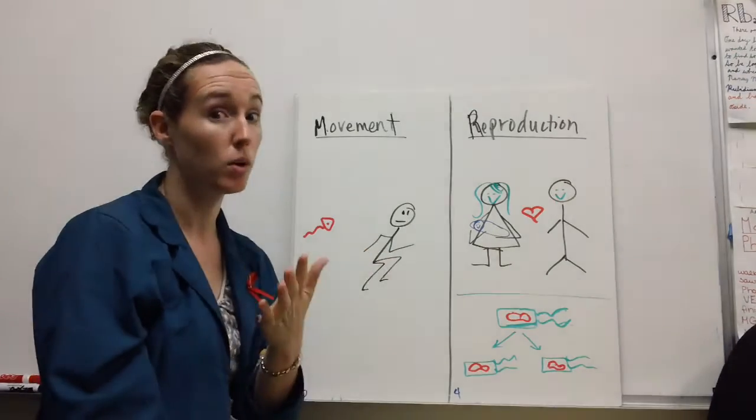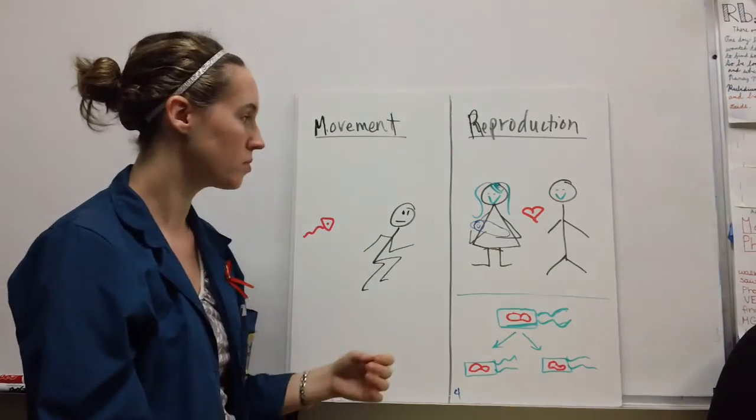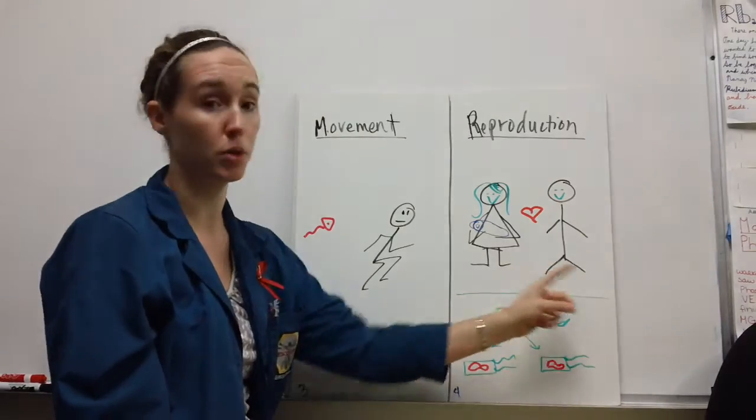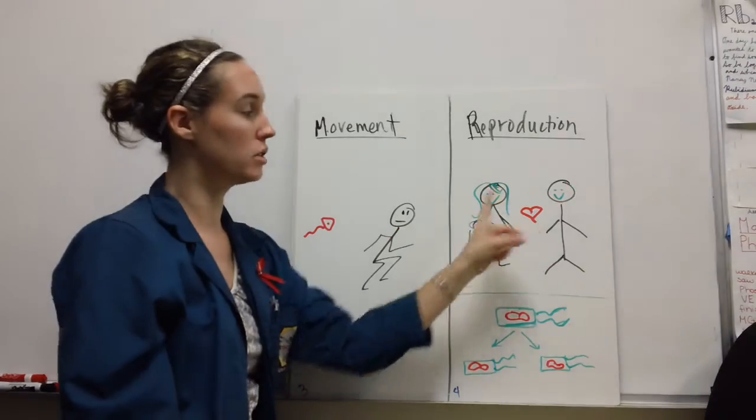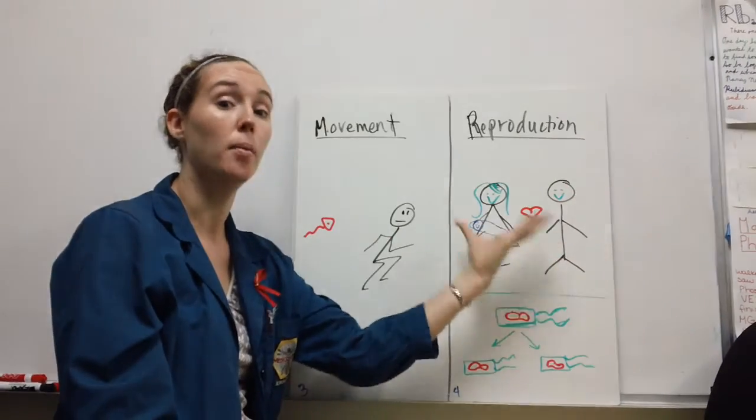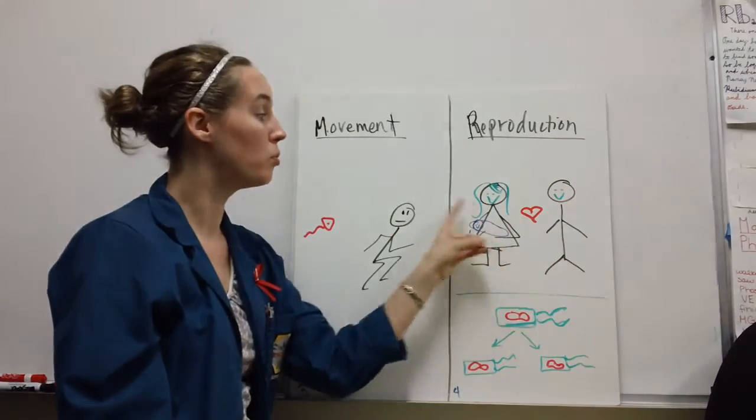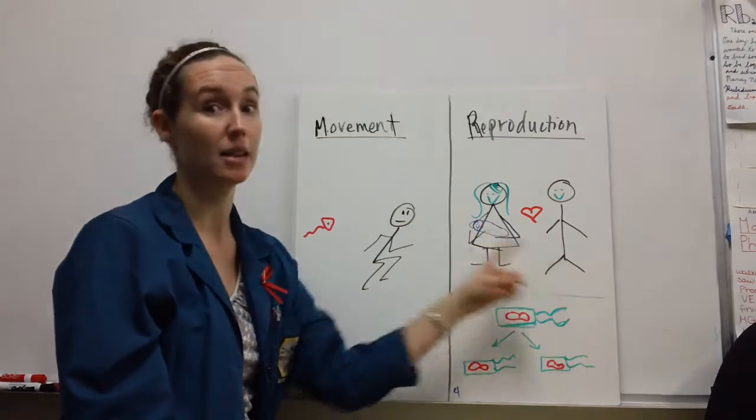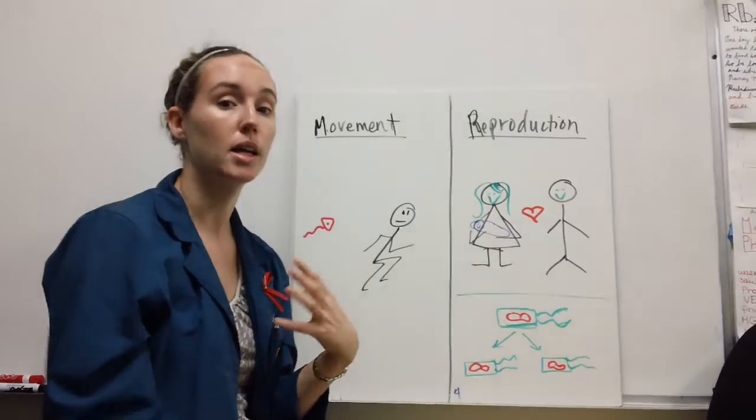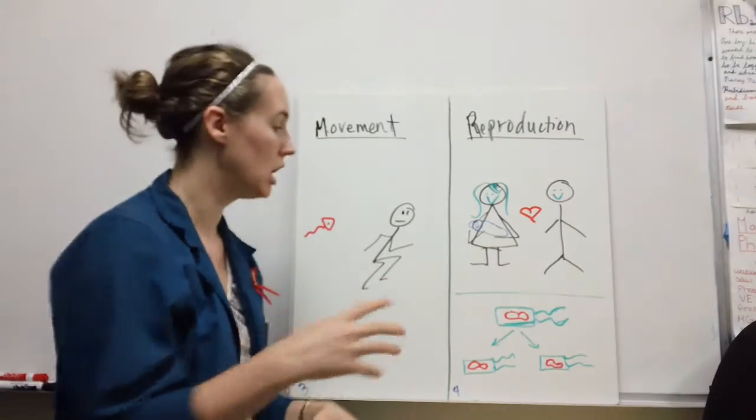Also, all living things reproduce. This may happen sexually, where we take genetic information from two individuals and combine them to make a brand new genetically unique organism, like this mommy and daddy making a baby. Or it can be asexual reproduction.